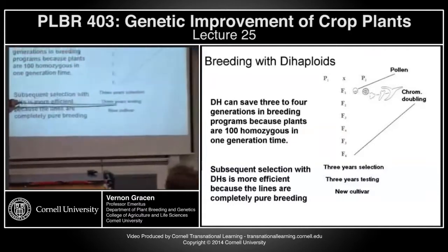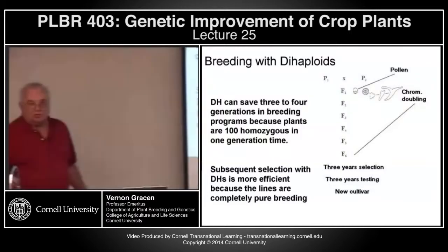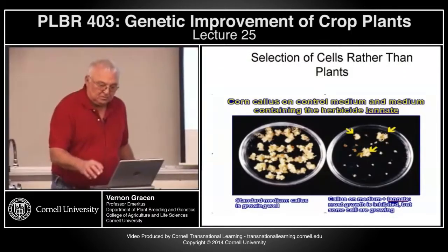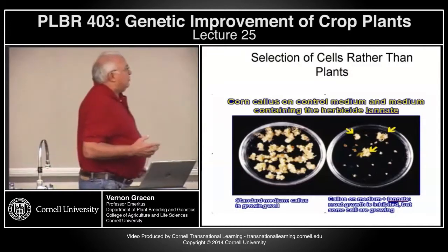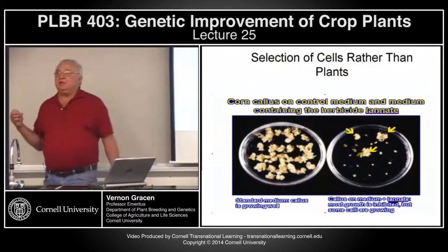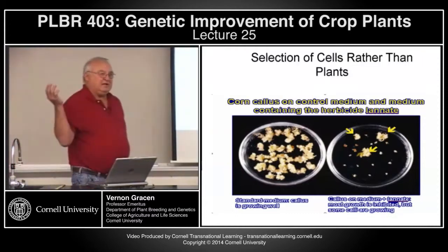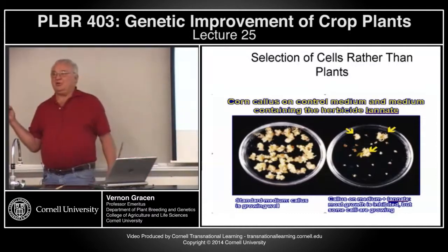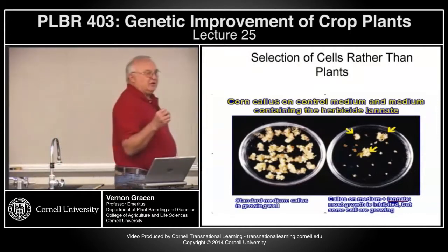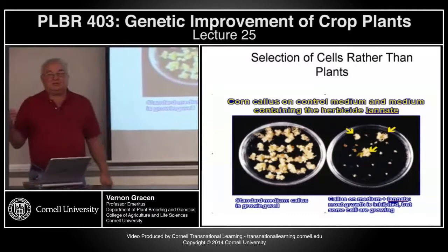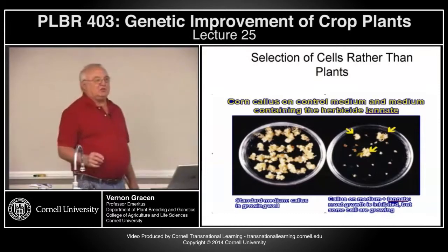Once you get down to the F6, you still need to go through the normal variety yield trial selection and testing to get to a new cultivar. For selection of cells rather than tissues — if you're dealing with traits controlled by inbred parents that differ by 10 genes, in order to look at all the various types of genetic segregates in an F2 population, you'd have to look at 5 or 6 million plants, which isn't feasible.